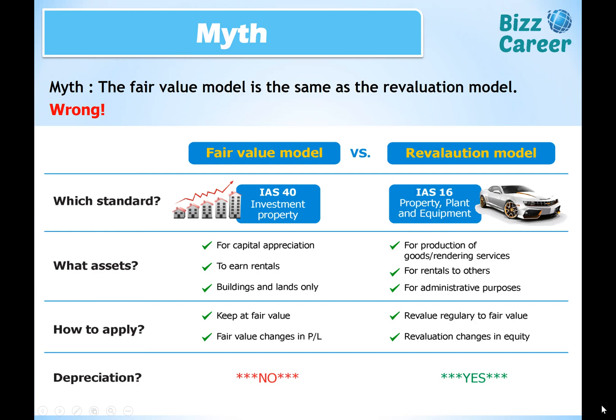If the purpose is for the head office or factory production — where the company uses the asset directly in the business — then it falls under IAS-16 as property, plant and equipment.